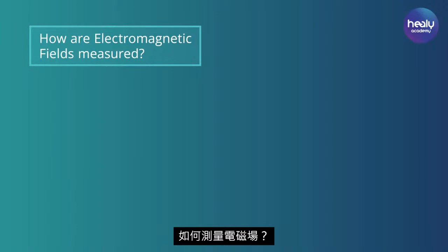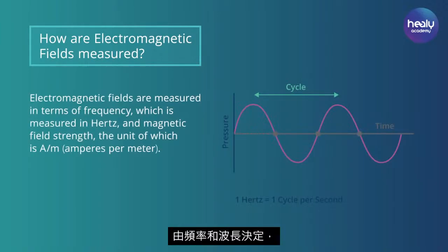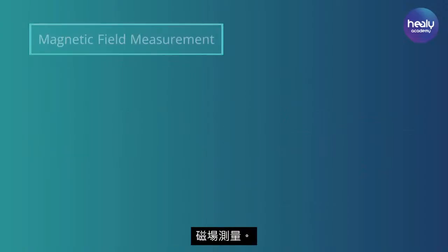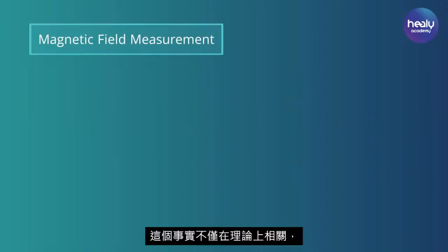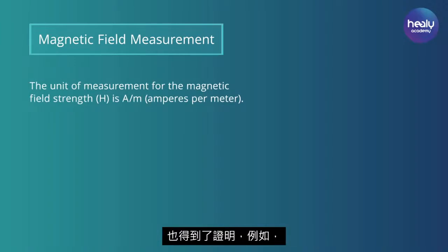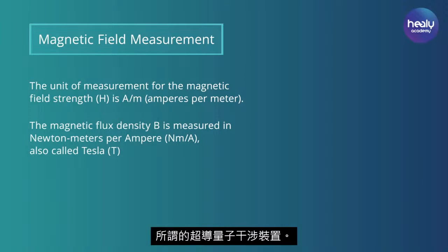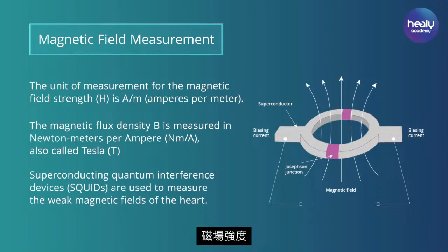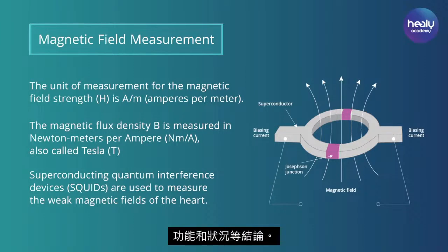The energy of electromagnetic fields is determined by frequency and wavelength, propagates at the speed of light, and can be calculated or measured on the basis of their frequency and the strength of their magnetic field. One hertz corresponds to one full sine wave per second. That this fact is not only theoretically relevant but also of concrete use is demonstrated by so-called superconducting quantum interference devices. They measure even the smallest changes in electromagnetic fields on the basis of field strength and flux density, and can thus draw conclusions about the function and condition of the heart in the electromagnetic field of our organs.